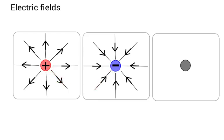A positive charge, if there was a positive charge here, it would be repelled and move in this direction. And here we've got an object with no charge, so there's no field around it.